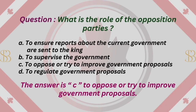Question: What is the role of the opposition parties? A. To ensure reports about the current government are sent to the King. B. To supervise the government. C. To oppose or try to improve government proposals. D. To regulate government proposals. The answer is C. To oppose or try to improve government proposals.